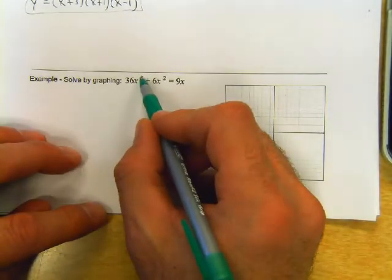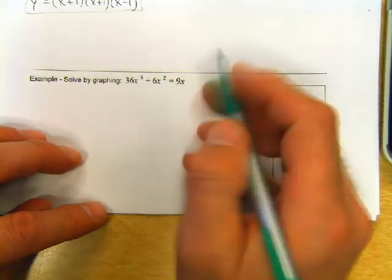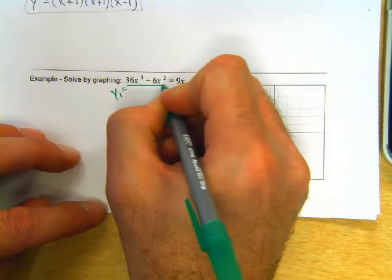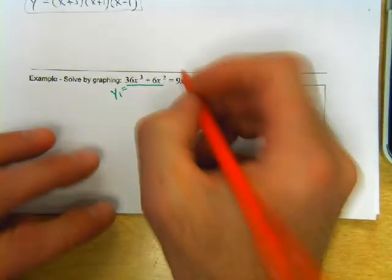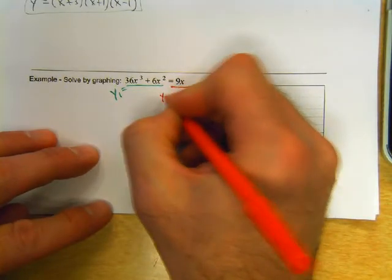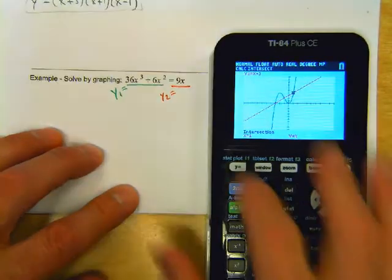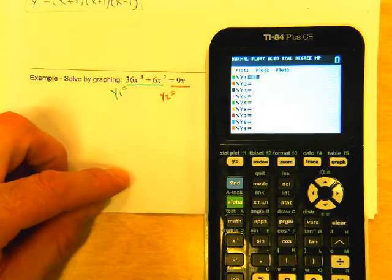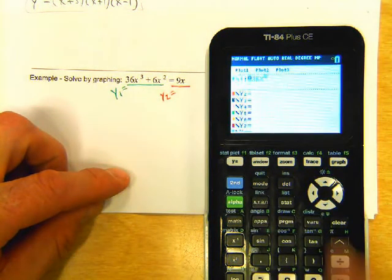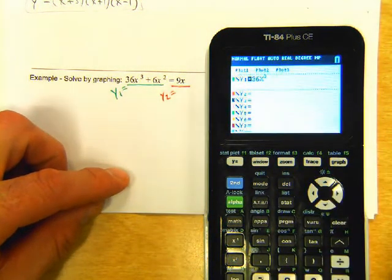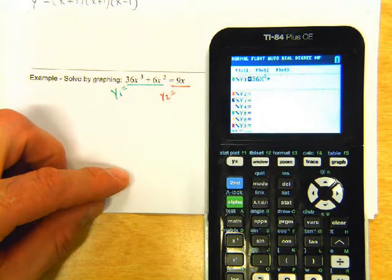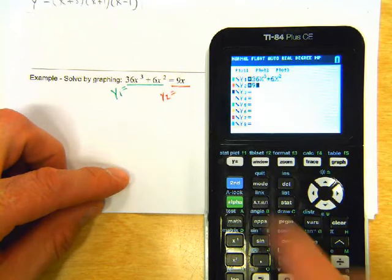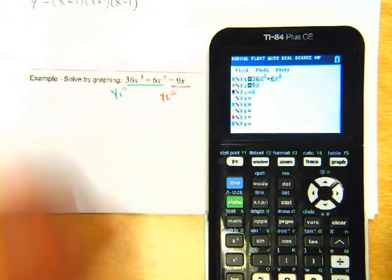So solve by graphing 36x cubed plus 6x squared equals 9x. I'm going to put the left side equal to y1 and the right side equal to y2.